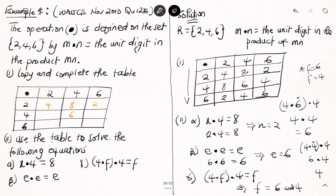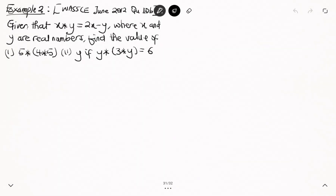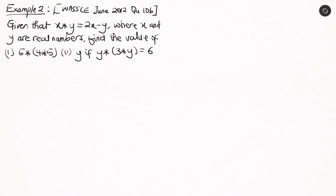Let's proceed to another example. We are given that x ⊙ y = 2x − y where x and y are real numbers. We have to find: (i) 5 ⊙ (4 ⊙ 5), and (ii) the value of y if y ⊙ (3 ⊙ y) = 6. This is from WASSCE June 2012, question number 10b.